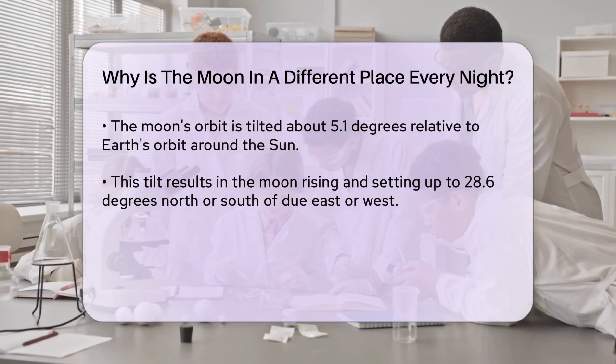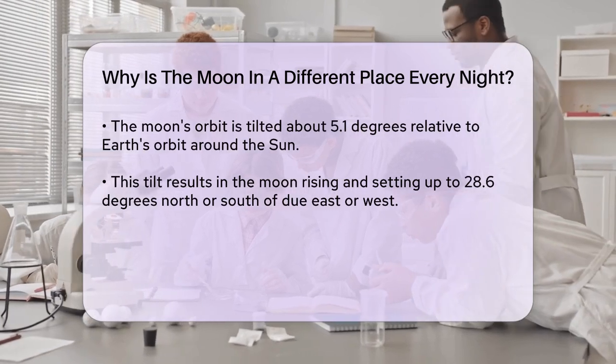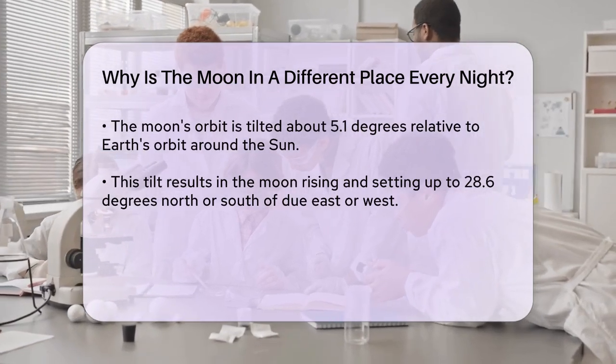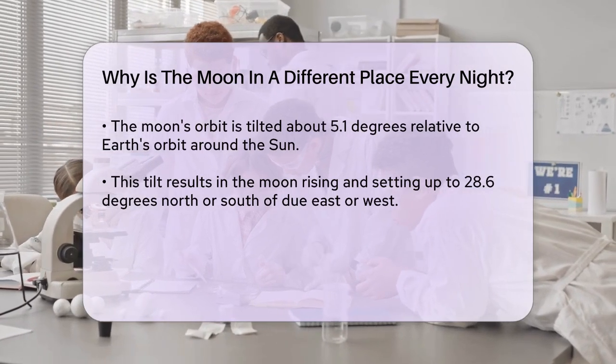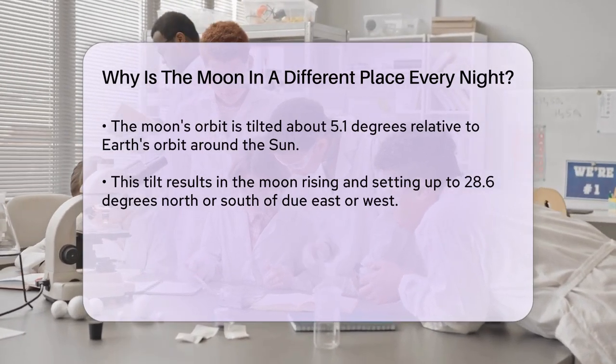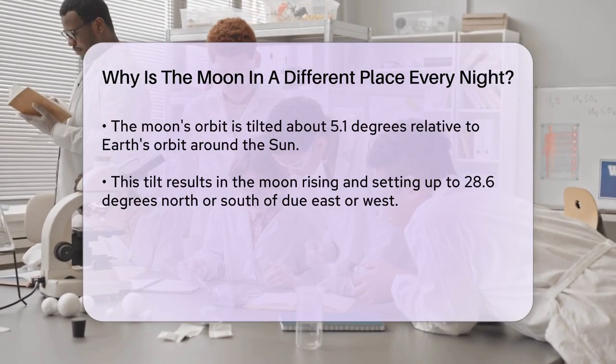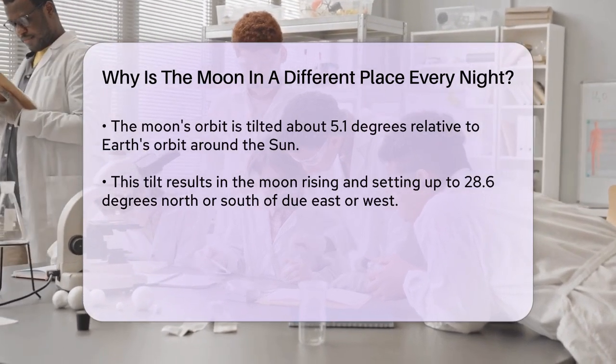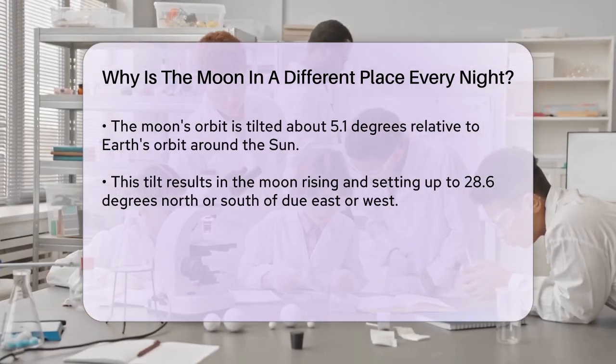The combination of these movements explains why the Moon appears in different parts of the sky each night. As the Earth moves around the Sun, the Moon has to travel a bit farther in its orbit to complete its phase cycle, which takes about 29.5 days. This is known as a lunar month.